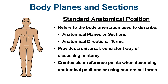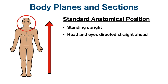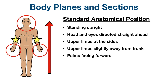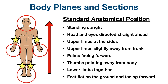We can use the picture of the man to illustrate the standard anatomical position. The correct position is standing upright with the head and eyes directed straight ahead. The upper limbs are hanging down at the sides and slightly away from the trunk so the hands aren't touching the sides. The palms are facing forward and the thumbs are pointing away from the body. The lower limbs are together and the feet are flat on the ground facing forward.